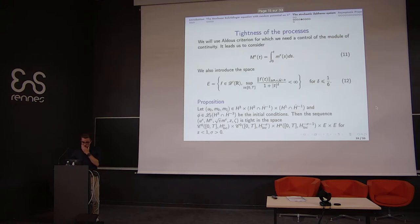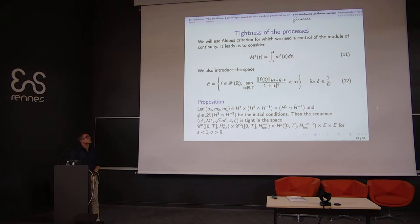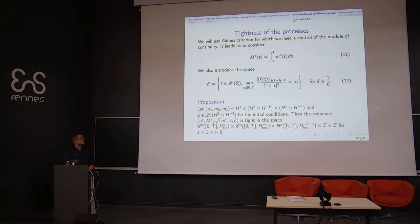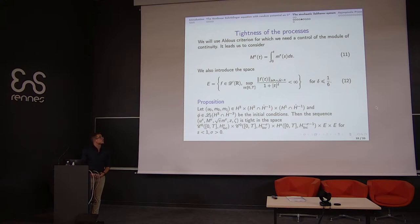We also need a tightness result. We introduce capital M-epsilon(t) as a primitive of the process m-epsilon. Under good conditions on phi and the initial data, the processes u-epsilon, m-epsilon, square root of epsilon times m-epsilon, z, and zeta are tight in their respective spaces. To prove this, we use an interpolation argument thanks to the bounds from the previous proposition, and the Aldous criterion applied in the space H^{-1/2}.